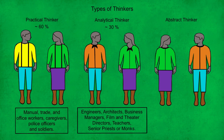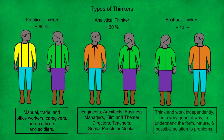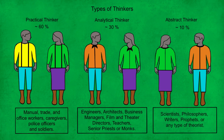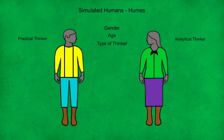Finally we have the abstract thinkers, who compose about 10% of any population. These individuals think and work independently in a very general way, to understand the form, nature, and possible solution to physical and social problems. These type of thinkers usually become scientists, philosophers, writers, prophets, or any type of theorist. So the type of thinker a Hume is will greatly influence the type of occupation they get in the simulation.